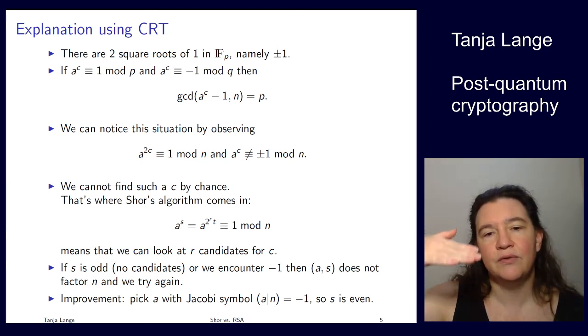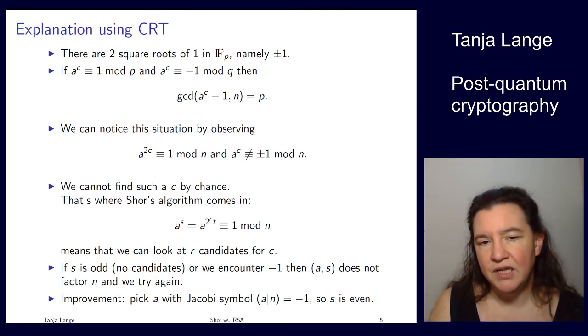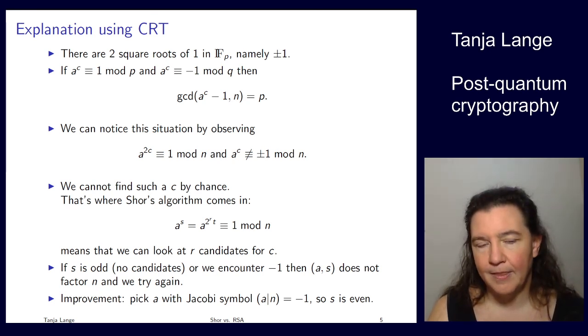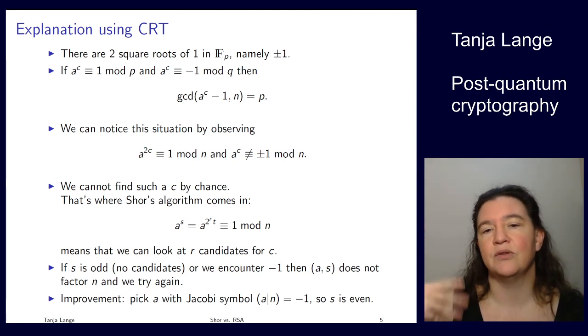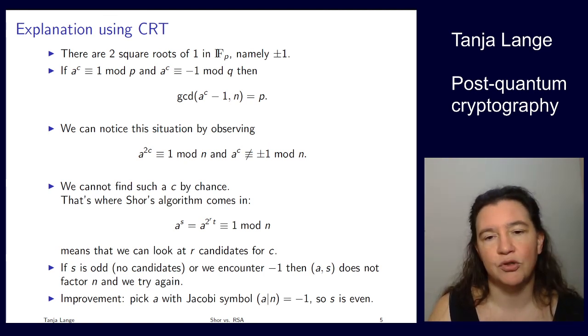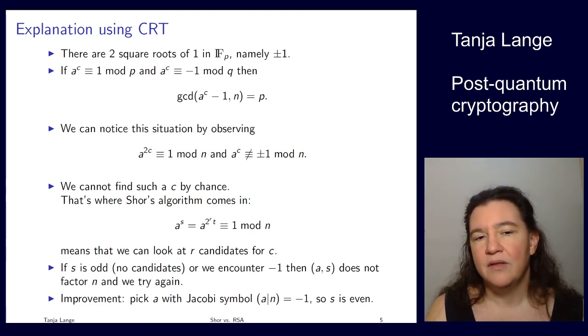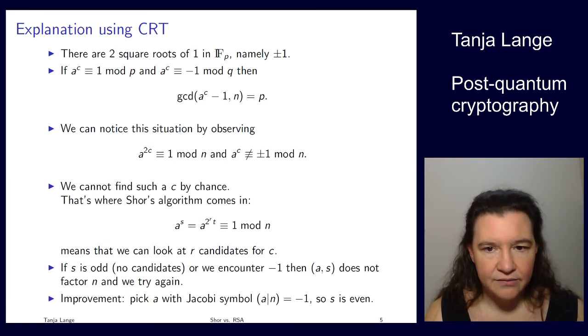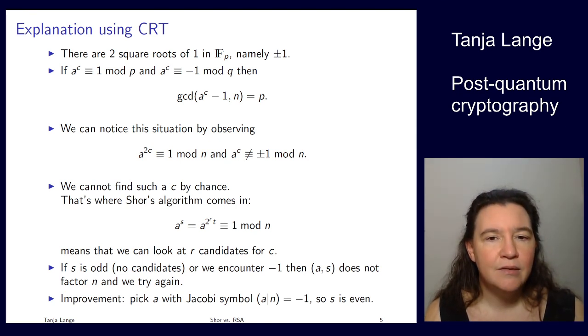We can basically look at different candidates for c. So we're starting with a^t, and then that could be our c, or 2t, or 4t. So we have different candidates for the c. Now if s is odd, so that means r is 0, then we don't have any candidates. Or if we run through -1, and so then we'll be encountering +1 as the next one, then this tuple of a and period s does not factor n, and we have to try with another a. Now this is not necessarily the correct period, so you could have a multiple, but if it's odd, then you will never see anything nicer with that. If you encounter an even period, but you were just unlucky, then you might get better results by trying again, but it's safer to randomize completely and pick a new a.